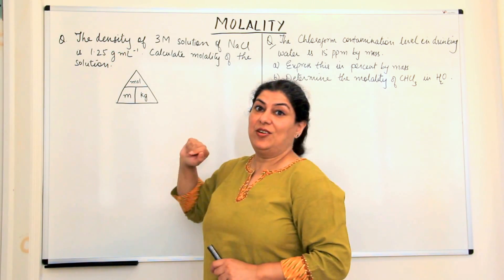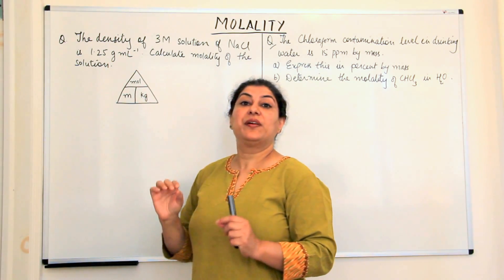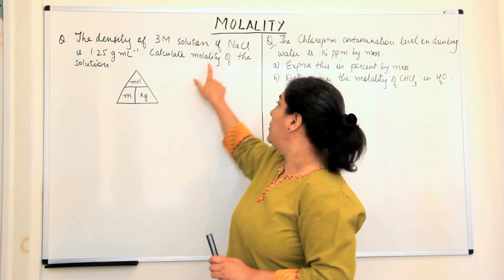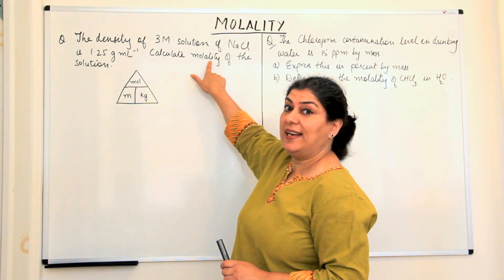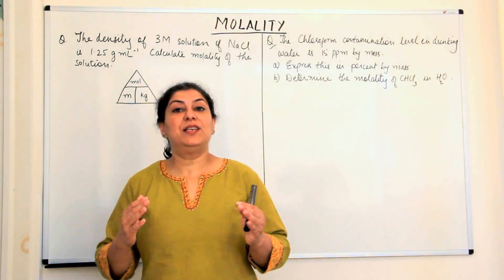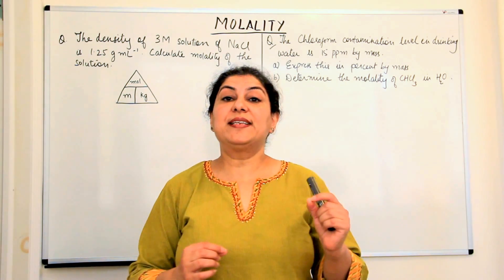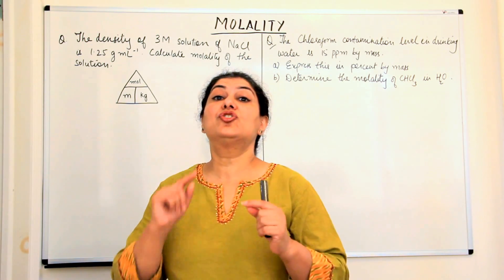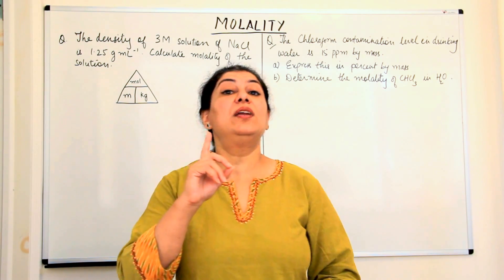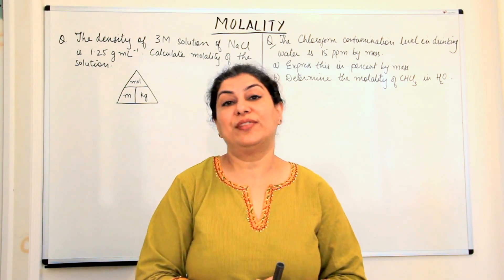The density of a three molar solution of sodium chloride is 1.25 grams per milliliter. You have to calculate the molality of the solution. The molality of a solution is defined as the number of moles of solute present in one kilogram of the solvent — not the solution.